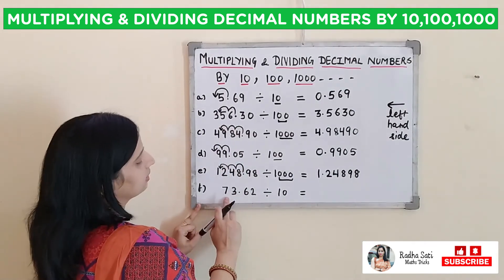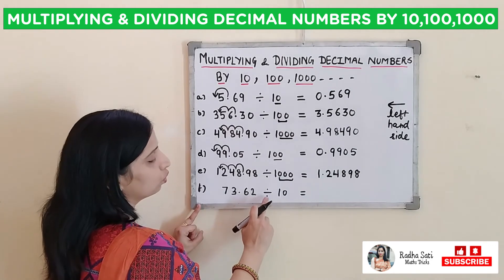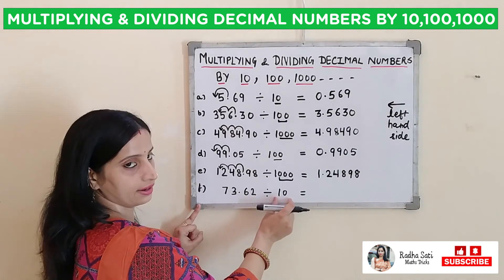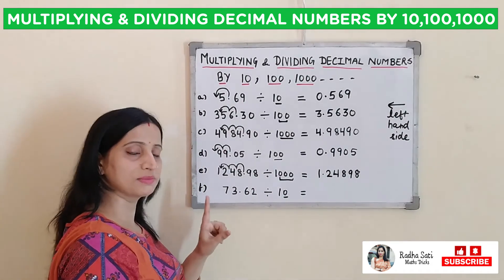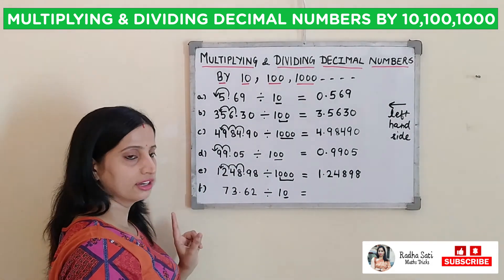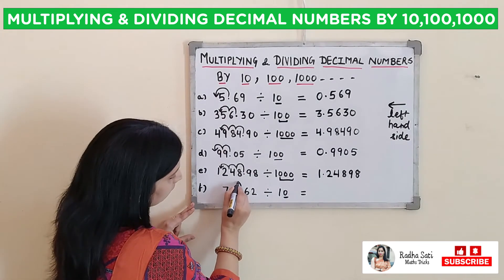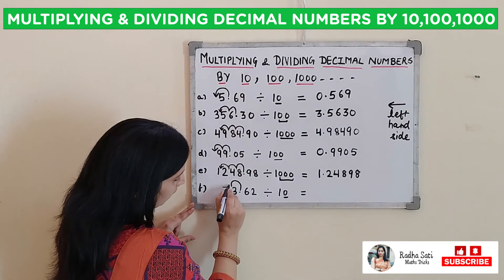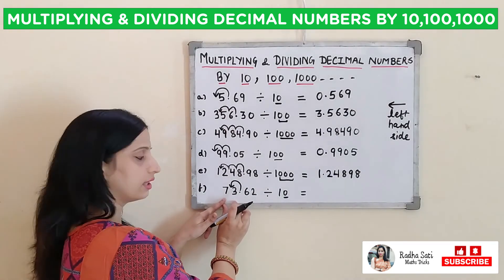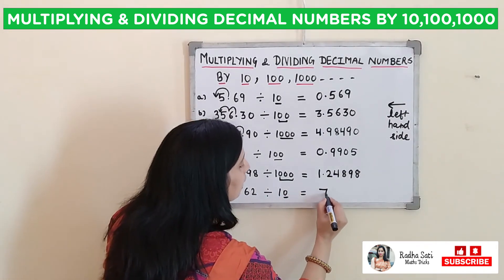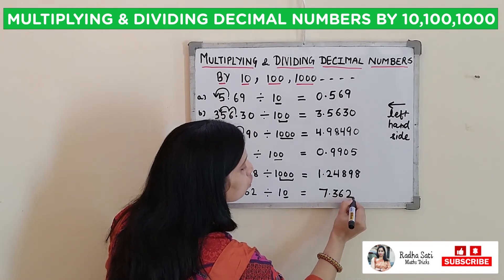This last one: 73.62 divided by 10. In 10 there is only 1 zero, so the decimal will shift to the left side by only 1 place. Our decimal will shift to the left side, and now it will come between 7 and 3. So our answer will become 7.362.